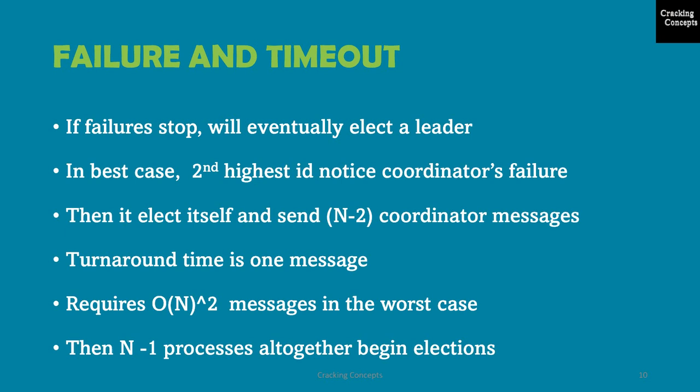Taking the best case for this algorithm: the second highest ID process will notice that the coordinator has failed, elect itself, and send N-2 coordinator messages, where N is the number of processes in the group. In this case the turnaround time is 1 message. In the worst case, the number of messages required is O(N²), as N-1 processes will all begin elections.